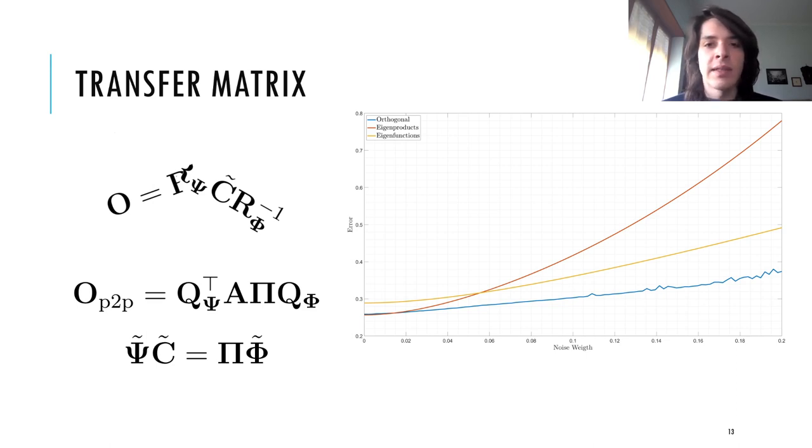We can see that as we inject more and more noise, the eigenproducts approach leads to very unstable results and reaches very high error values.